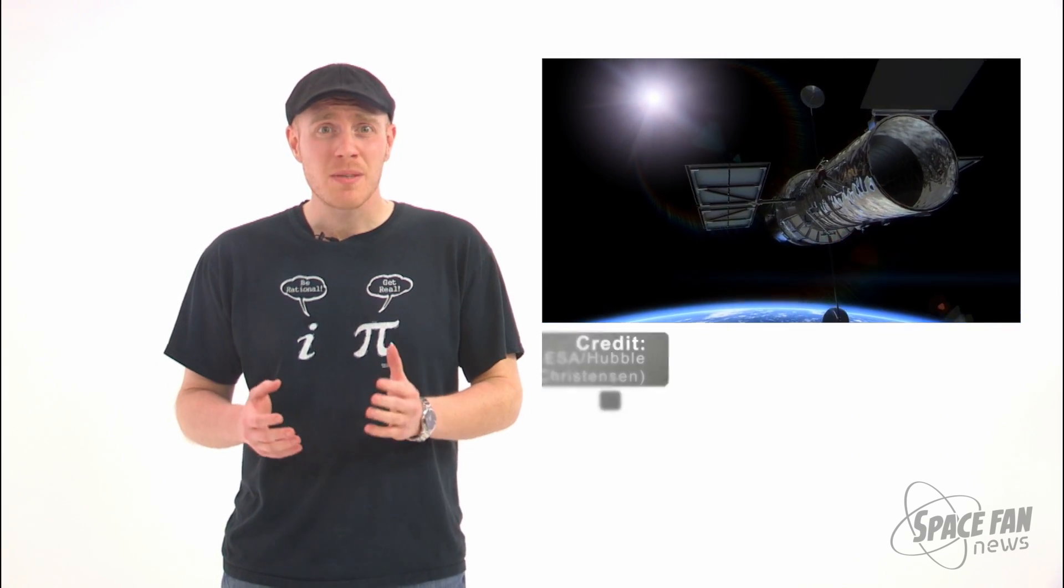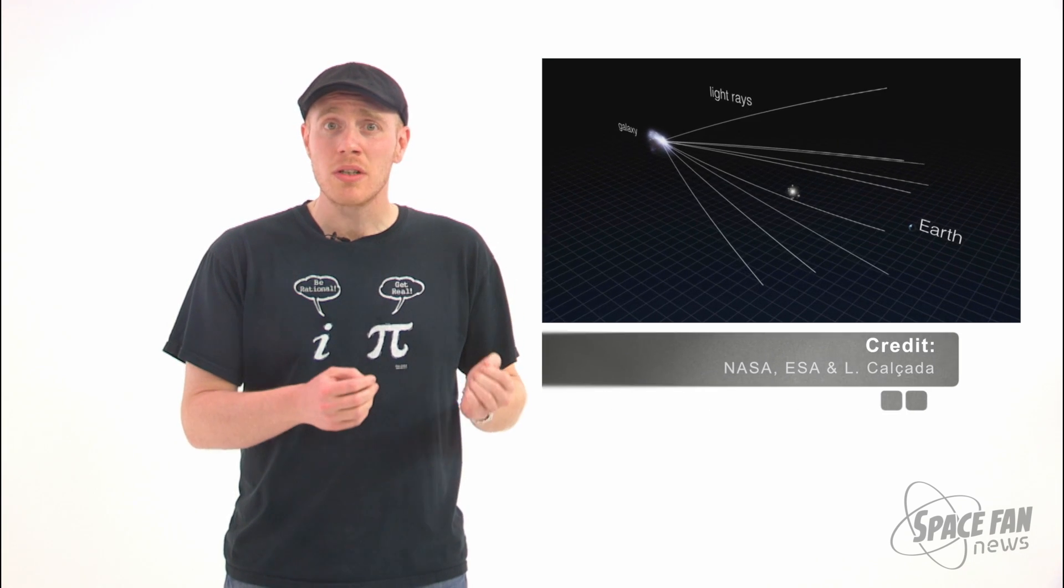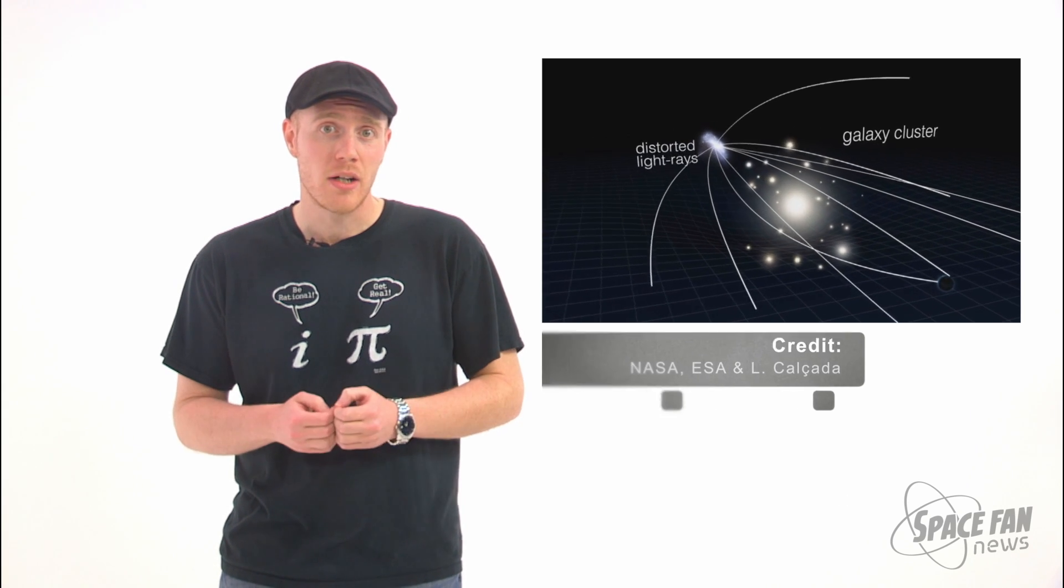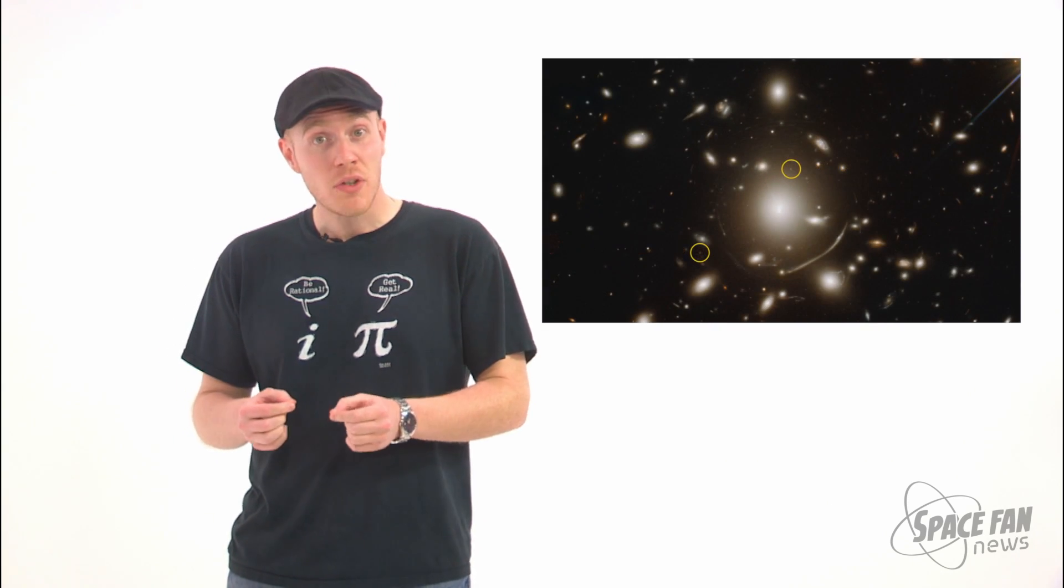Astronomers will be pointing the Hubble Space Telescope, the Spitzer Space Telescope and the Chandra X-ray Observatory at Galaxy Clusters in order to use the gravitational lensing caused by its dark matter to look even further into the universe, and thus even further back in time.